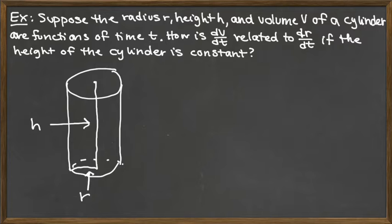For this particular problem, we want to figure out how dV/dt and dr/dt are related to each other, but the extra piece of information is that h is going to be assumed to be constant. That's really important. We need to know what's varying over time and what's constant so that we know which variables depend on time.